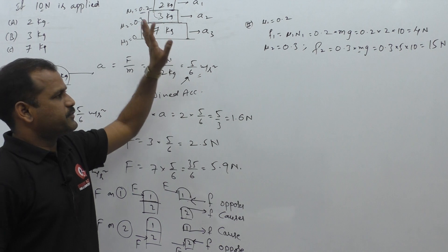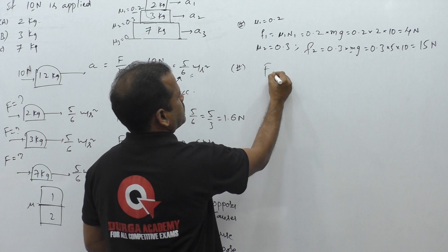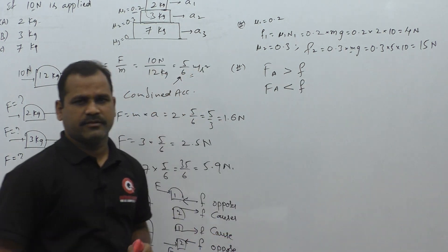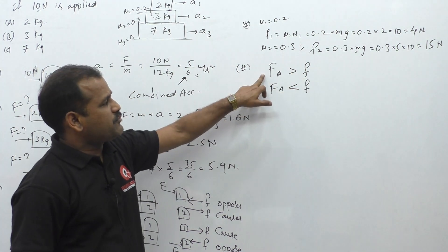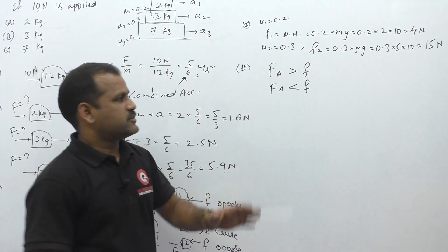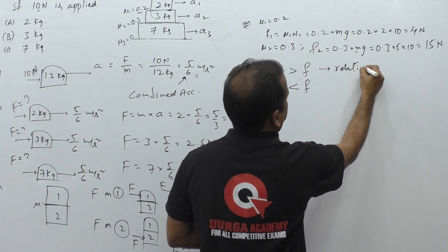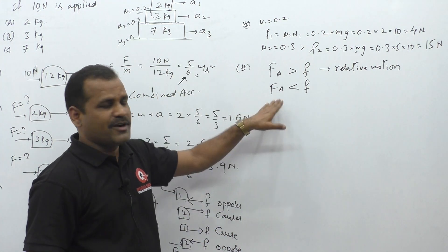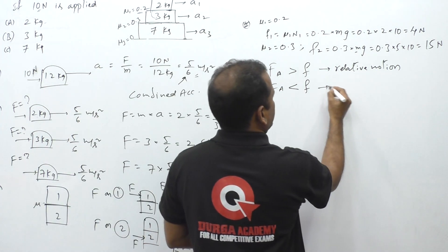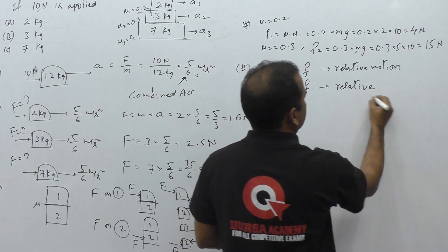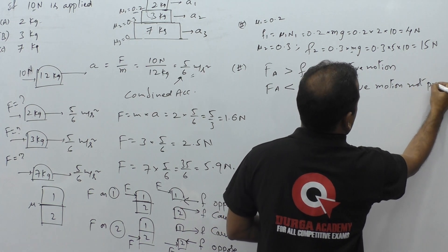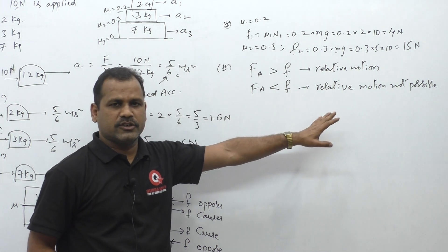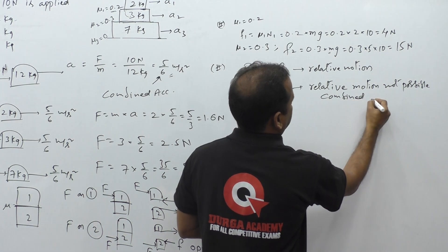An important observation: if the applied force is greater than the frictional force, relative motion exists. If the applied force is less than the frictional force, there is no relative motion and only combined motion is possible. Since the applied force is 10 newtons and f2 is 15 newtons, the applied force is always less than f2, so the 3kg and 7kg blocks always move together.